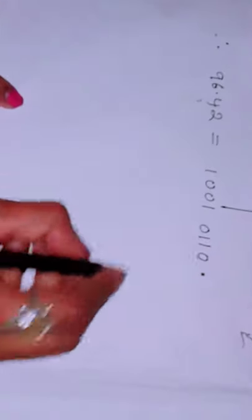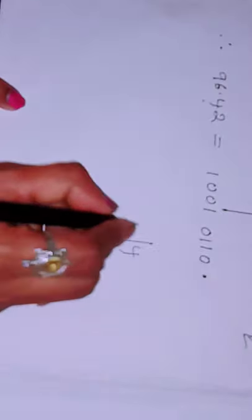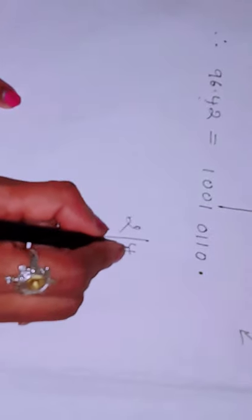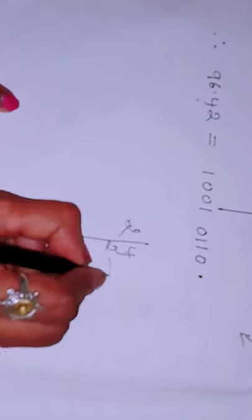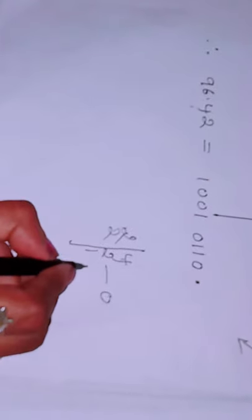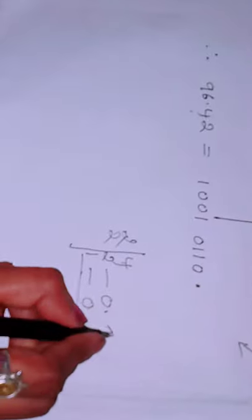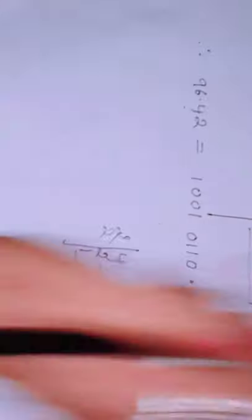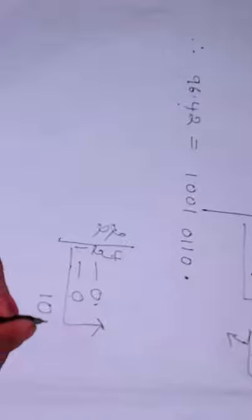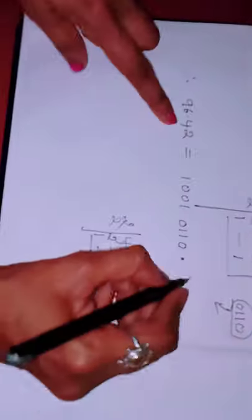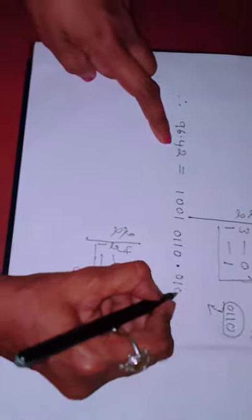Now 4. How will you convert 4? 4 divided by 2. 2 twos are 4, remainder 0. 2 ones are 2, remainder 0. So this is 1, 0, 0, arrow mark from downward up. 1, 0, 0. So at the front I will put 0. Therefore, here 4 is 0, 1, 0, 0.